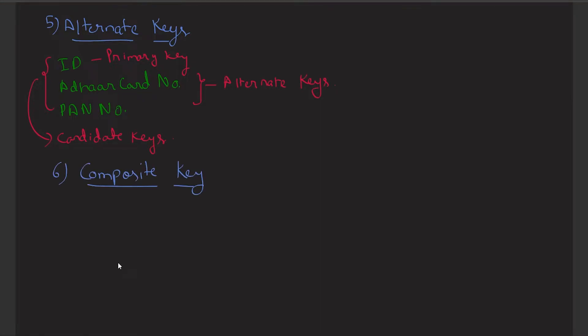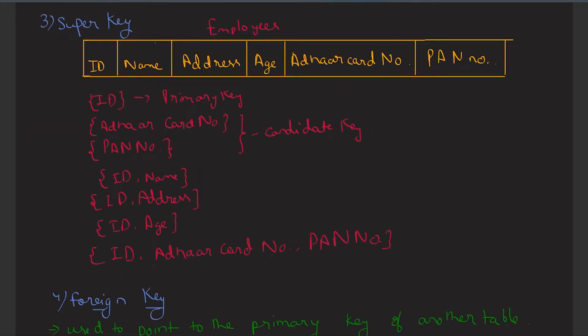Next is the composite key. Composite key is a key that has more than one attribute. If we create a key by combining two or more attributes, then that will be called as a composite key. Any key such as super key, primary key, or candidate key can be called a composite key if it has more than one attribute. For example, ID, name, address, Aadhaar number, and PAN number combined can be called a composite key.